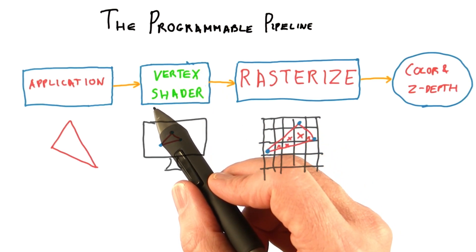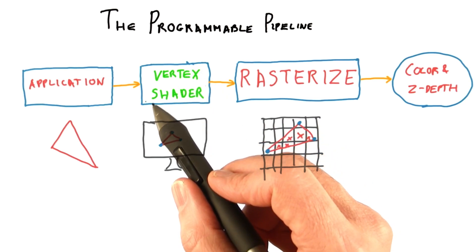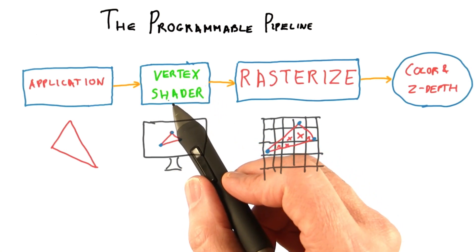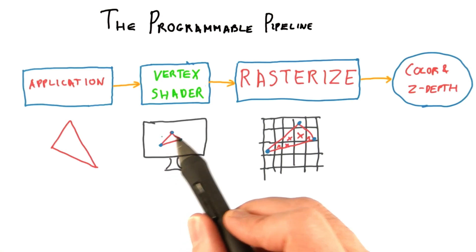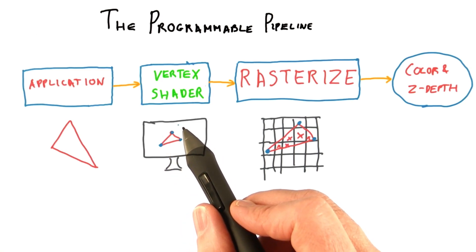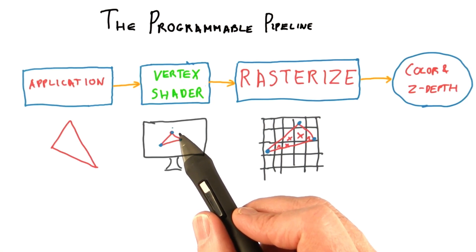The vertex shader uses information provided to it to manipulate each vertex in some way. For example, the color of the triangle at this point could be computed, or the vertex's position could be modified, if you wanted to have an object inflate or explode. One operation the vertex shader always does is to output a location of the vertex on the screen.